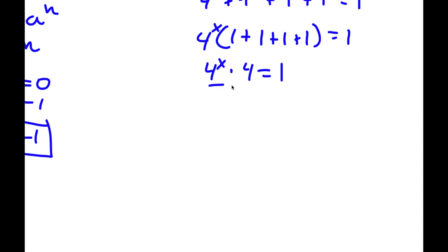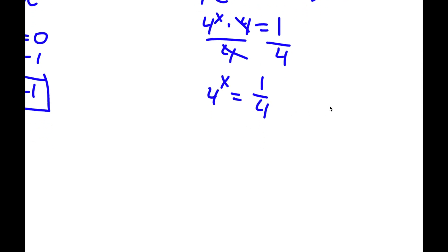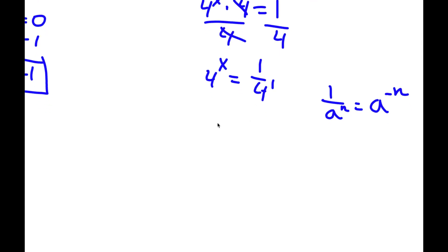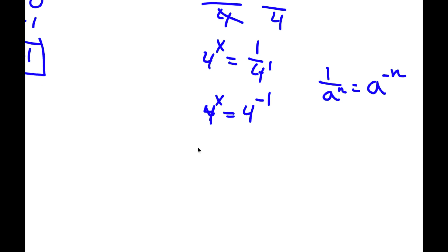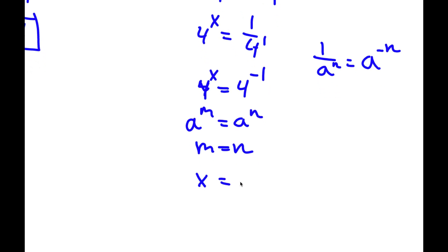Instead of combining those two, I'm going to divide both sides by 4, so these cancel out. Now 4 to the power of x is equal to 1 over 4. If I have something in the form 1 over a to the power of n, this is the same thing as a to the power of negative n. So 1 over 4 to the power of 1 equals 4 to the power of negative 1. So I have 4 to the power of x is equal to 4 to the power of negative 1. Since the bases are the same, m equals n, so x is equal to negative 1.